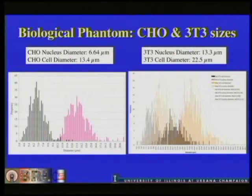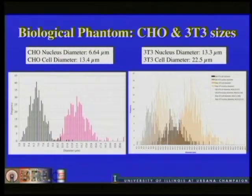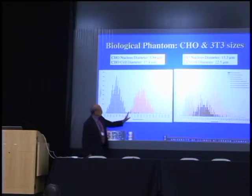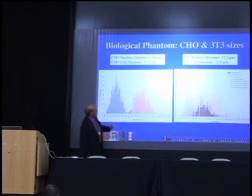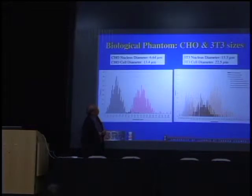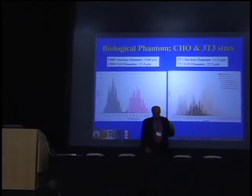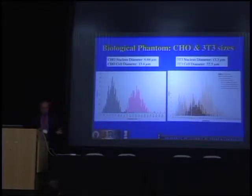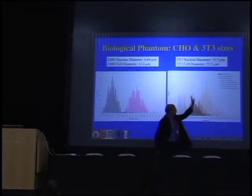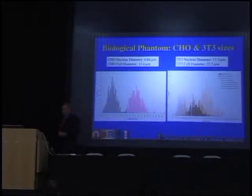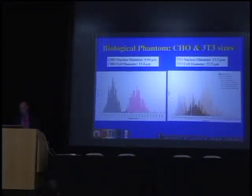We culture these cells to measure their sizes. For CHO cells, the range goes from about 5 microns to about 16 microns. The black bars represent nucleus diameters and the pinkish ones are cell diameters. For 3T3 cells, if you culture them multiple times they get smaller — a natural process — and indeed the newer cultures are larger than the older ones. Our ability to measure sizes is pretty good.